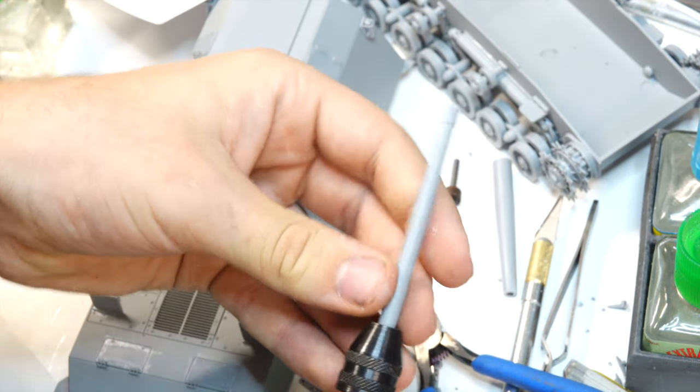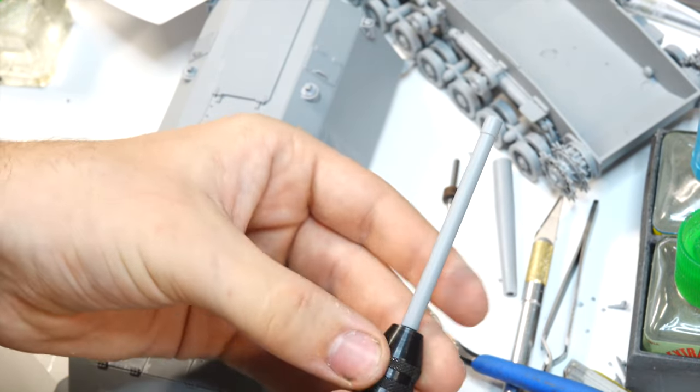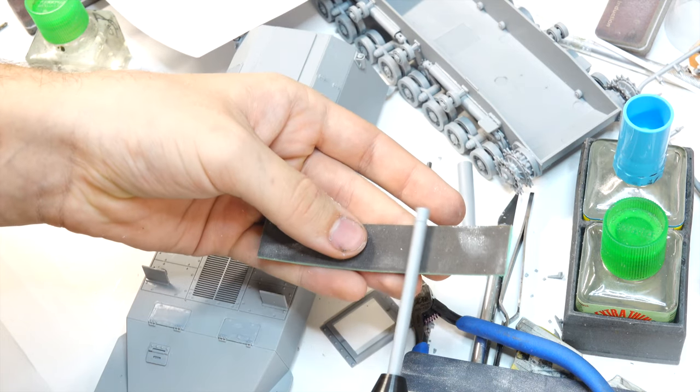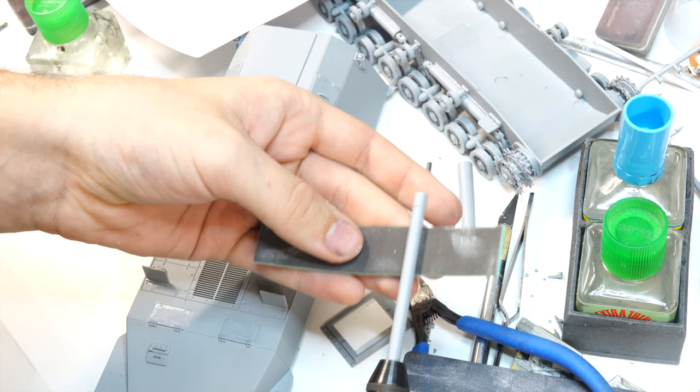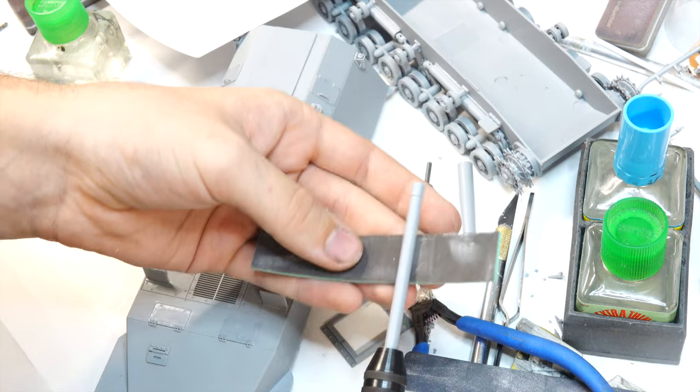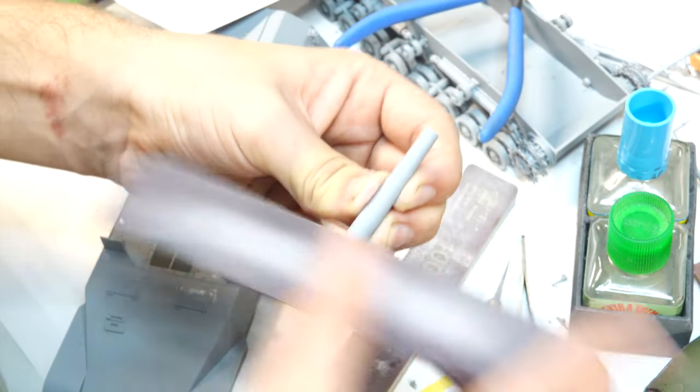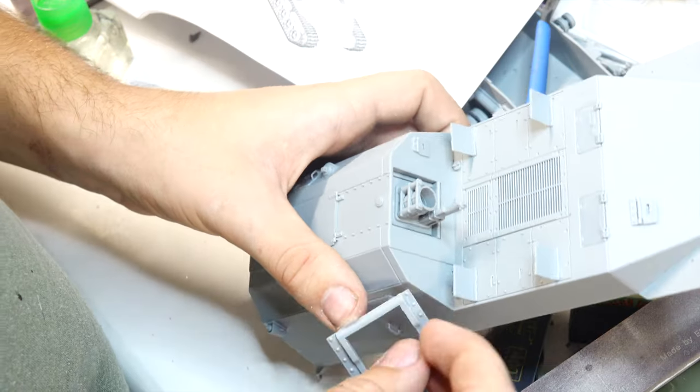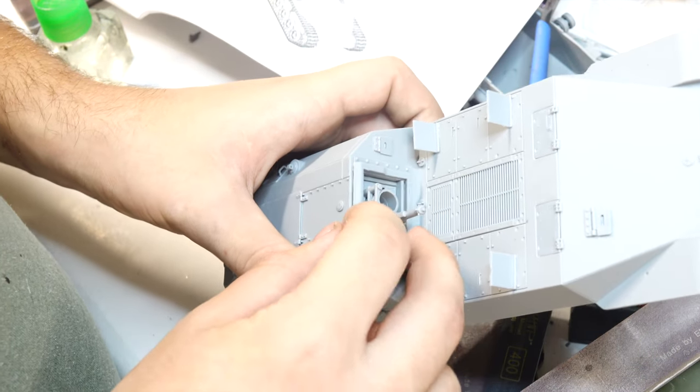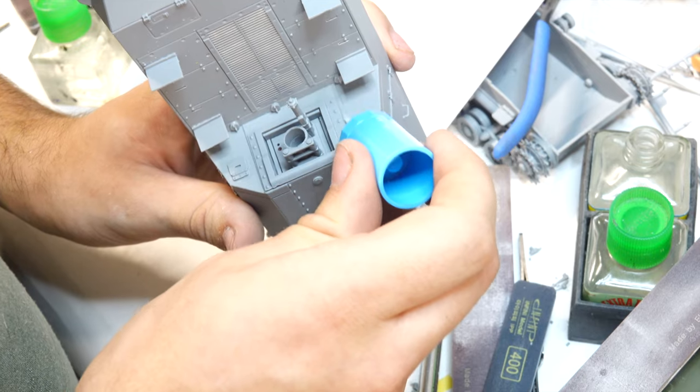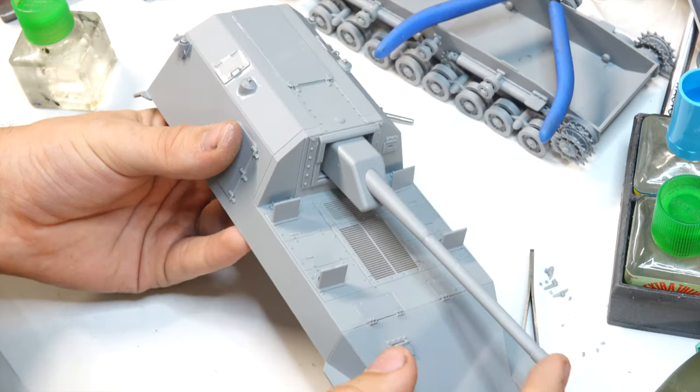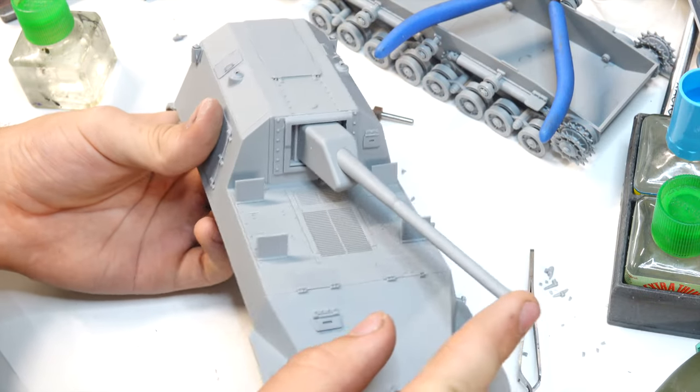Once again, I get to speed up the process by shoving this thing into my rotary tool and sanding all the nubs at once. Unfortunately, I have to do it manually once again on the other end of the barrel since it doesn't really have any way to shove it in the rotary tool without damaging it. This fat armor plate is also optional, but I put it on because it also looks cool.